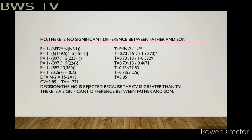The degrees of freedom (df) equals N minus 2, which is 15 minus 2, giving df equals 13. Using df=13 to look up the t-table, our TV is 1.771. Our CV is 3.85 and TV is 1.771. Since CV is greater than TV, the HO is rejected — meaning there is a significant difference between father and son in height.